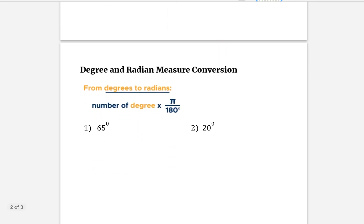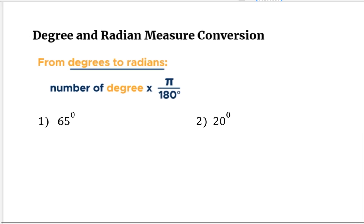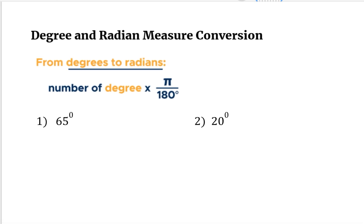Let's start with converting degree and radian measures. So what is a degree? Degree numbers such as number one, 65 degrees. So if you remember, we've been talking about right triangles. This angle here would be any number if we use a protractor to figure out what this measurement would be. For example, this is somehow close to 45 degrees, which is half of a 90 degree angle.